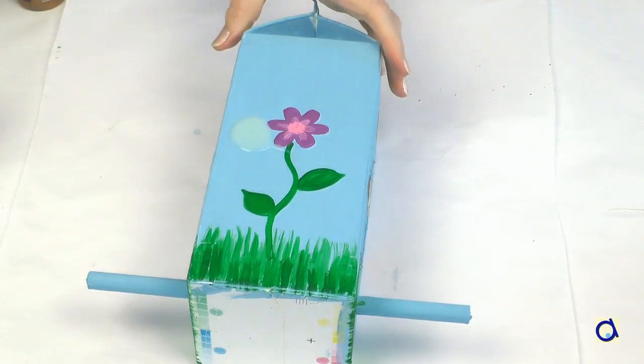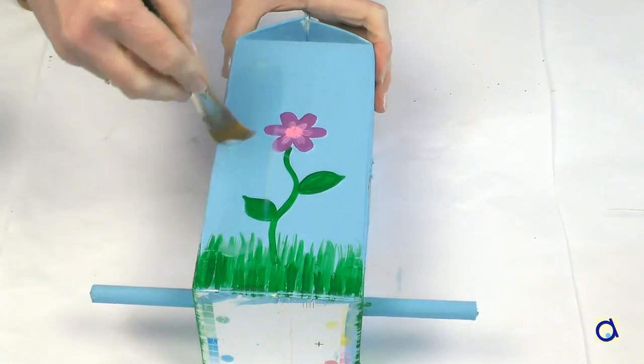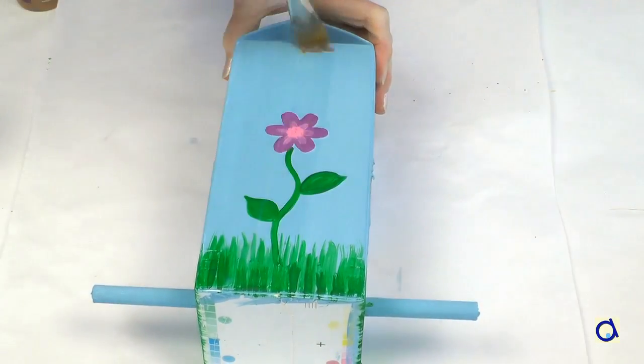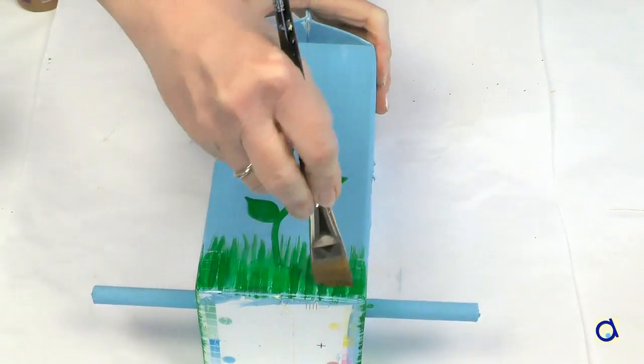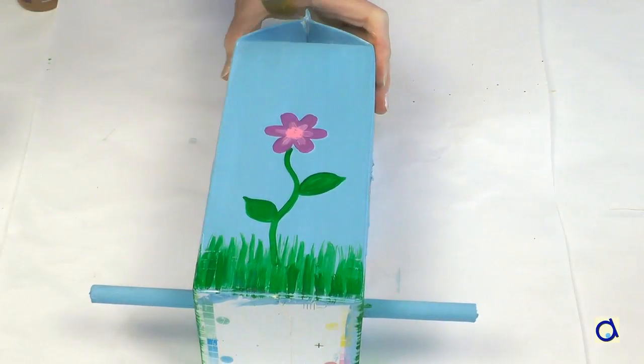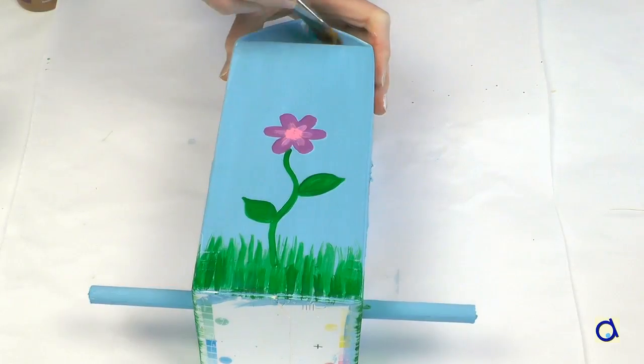When the paint is dry on all sides of the milk carton and you are satisfied with your project, add a coat of acrylic varnish. The acrylic varnish gives a nice finish and protects the paint.